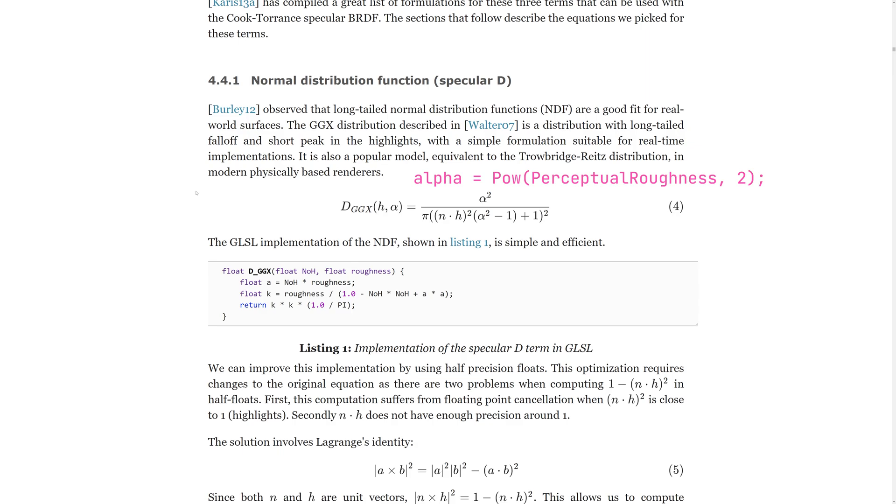So the alpha that we see in these equations is actually the perceptual roughness squared. This remapping is often a source of confusion for me since most papers and resources don't specify which roughness they mean in their formula. Here we see a possible implementation of this function.